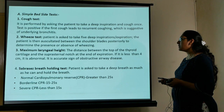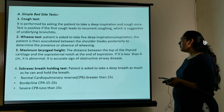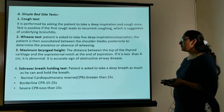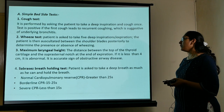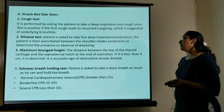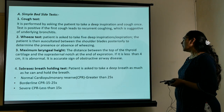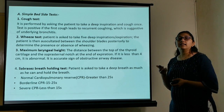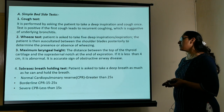Simple bedside tests to assess cardiopulmonary reserve include the cough test, where if the patient coughs and it leads to recurrent coughing, it indicates underlying bronchitis. The wheeze test involves asking the patient to take five deep inspirations and then auscultating for wheezing. Maximum laryngeal height, measured from the top of the thyroid cartilage to the suprasternal notch at end inspiration, indicates airway obstruction if it is less than 4 centimeters.